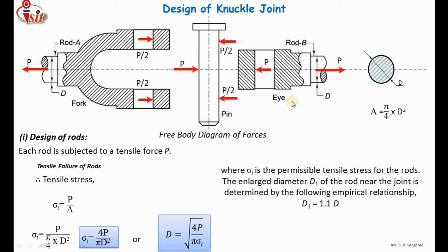Next, let us discuss the design of the pin. The pin is the element used to connect the fork and eye. When a tensile force of magnitude P is applied, there are three possible modes of failure of the pin. The first is shear failure. If the pin has a tight fit with the eye and fork, the middle portion contained inside the eye moves in one direction while the upper and lower portions inside the fork move in the opposite direction.